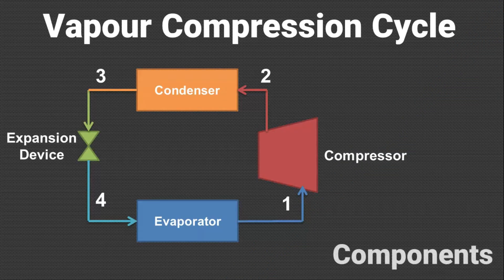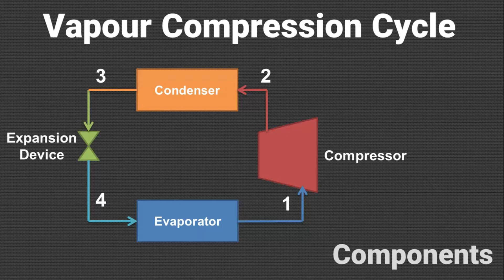First of all, let us see the basic components of the cycle. There are basically 4 components: compressor, condenser, expansion device, and evaporator. The compressor may be a reciprocating compressor, scroll compressor, or centrifugal compressor. The function of the compressor is to compress refrigerant vapor from low pressure to high pressure.